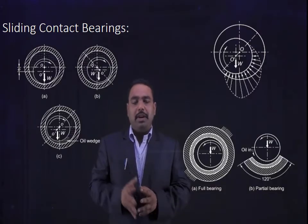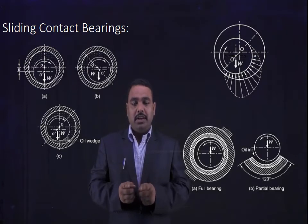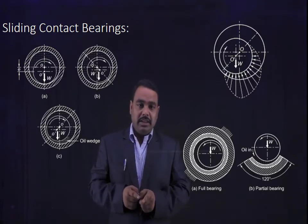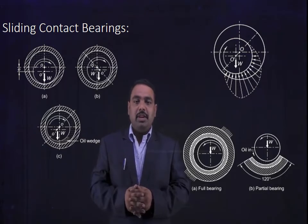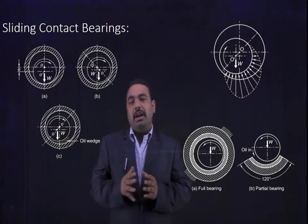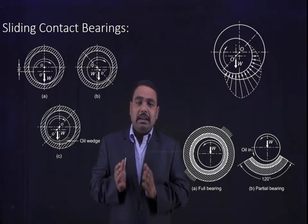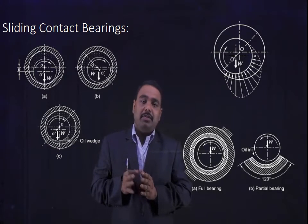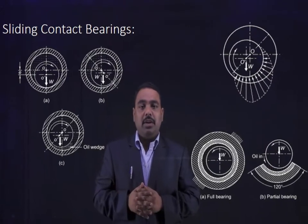As you all know, sliding bearing means one shaft — that is called a journal — will be rotating inside the hub. And there will be a gap between the hub and the shaft. That gap will be filled by a film of some lubricant.